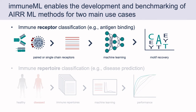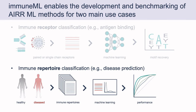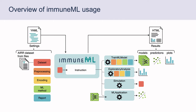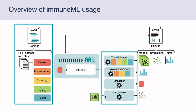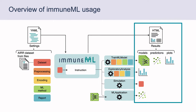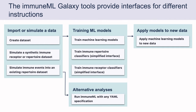ImmuneML can be applied to two types of classification problems. In receptor classification, we predict whether an immune receptor binds to a given antigen. In immune repertoire classification, we try to predict a disease. ImmuneML takes in an AIR dataset with labels to classify and a YAML specification file describing analysis components and instructions. The results can be navigated through an HTML summary file. We created eight different Galaxy tools which provide interfaces to these instructions.